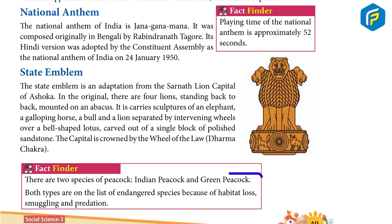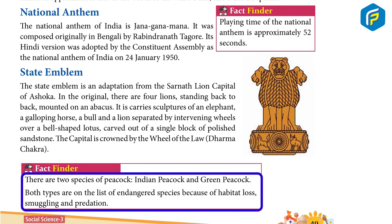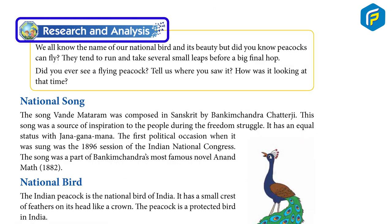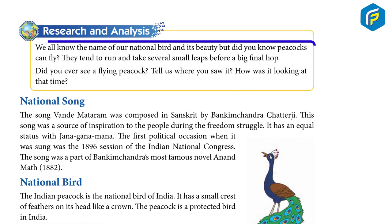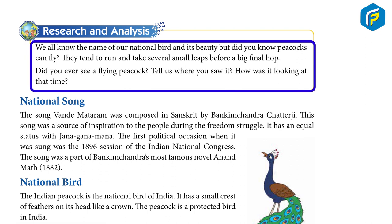Fact: There are two species of peacock — the Indian peacock and the green peacock. Both types are on the list of endangered species because of habitat loss, smuggling and predation. Research and Analysis: We all know the name of our national bird and its beauty. But did you know peacocks can fly? They tend to run and take several small leaps before a big final hop. Did you ever see a flying peacock?